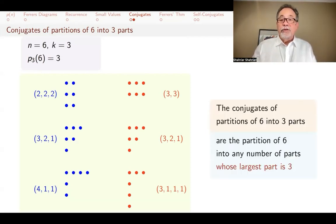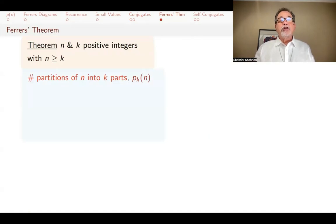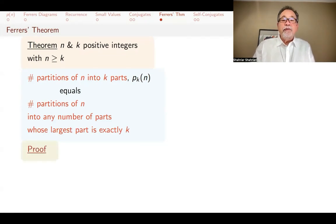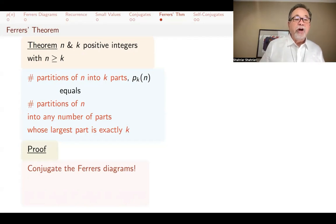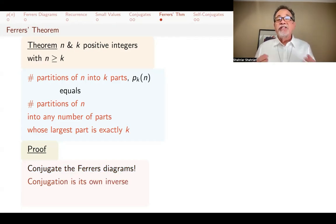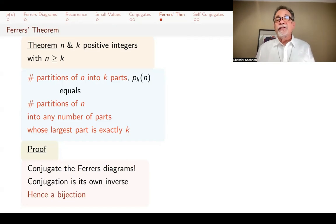This is actually a theorem — what Ferrer's proved when he introduced these diagrams. If n and k are positive integers and n is greater than or equal to k, the number of partitions of n into k parts, p of n sub k, is the same as the number of partitions of n into any number of parts whose largest part is exactly k. The proof: just conjugate the Ferrer's diagrams. Conjugation maps partitions into k parts to partitions whose largest part is exactly k, and since conjugation is its own inverse, it is a bijection.